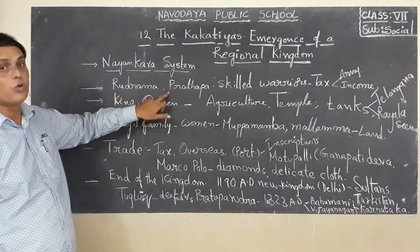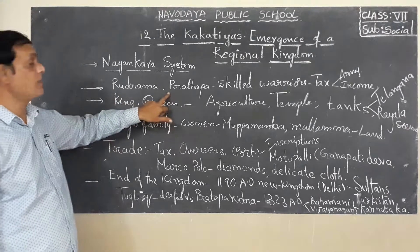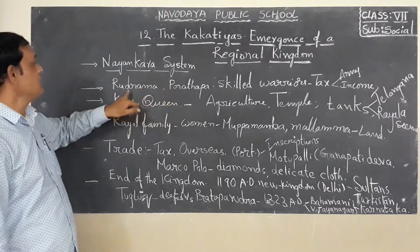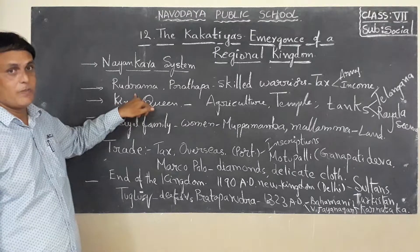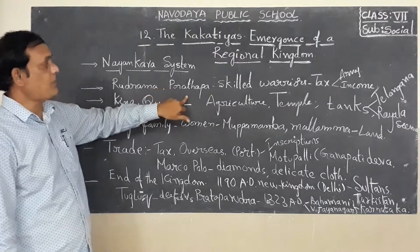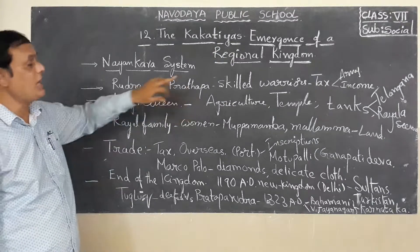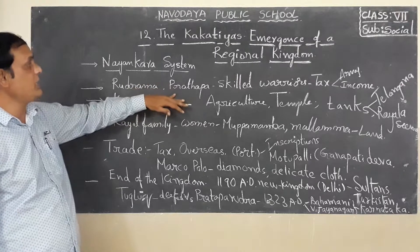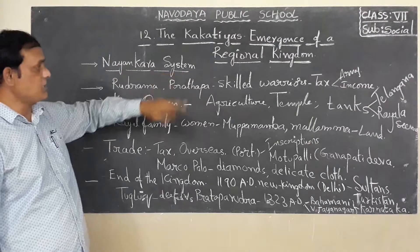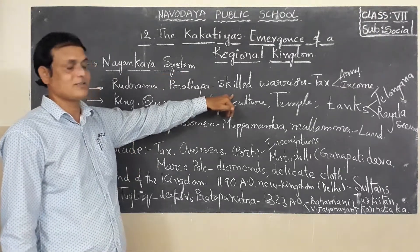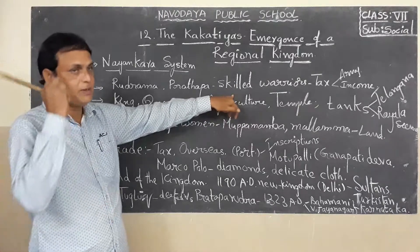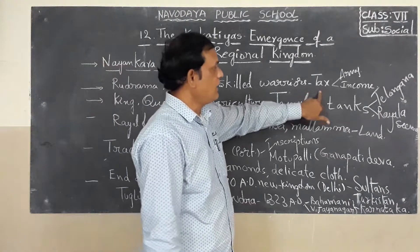So this is called the Naikara system. The main activity in this system was collecting tax from agriculture produce. Who introduced this system? Mainly two important kings in the Kakathiyas: Rudramadevi and Prataparudra. Rudramadevi dressed herself as a king. Both Prataparudra and Rudramadevi appointed this Naikara system — using skilled warriors to collect the tax under the king and queen.